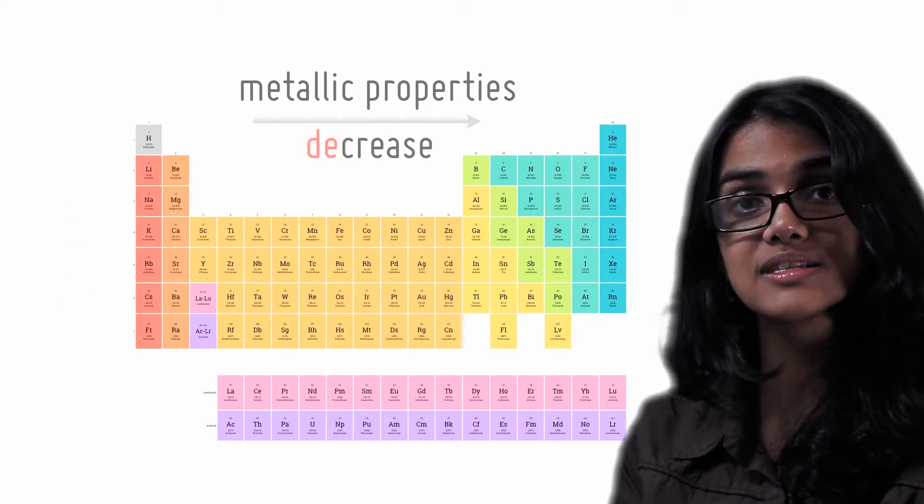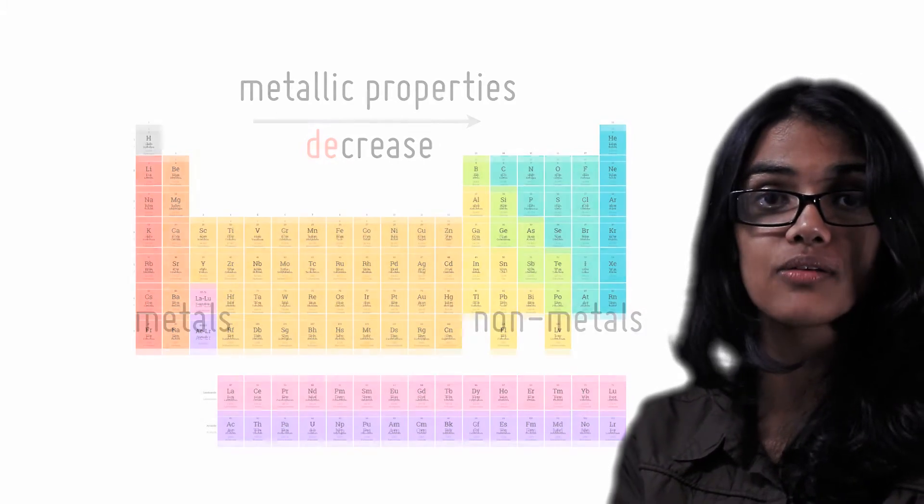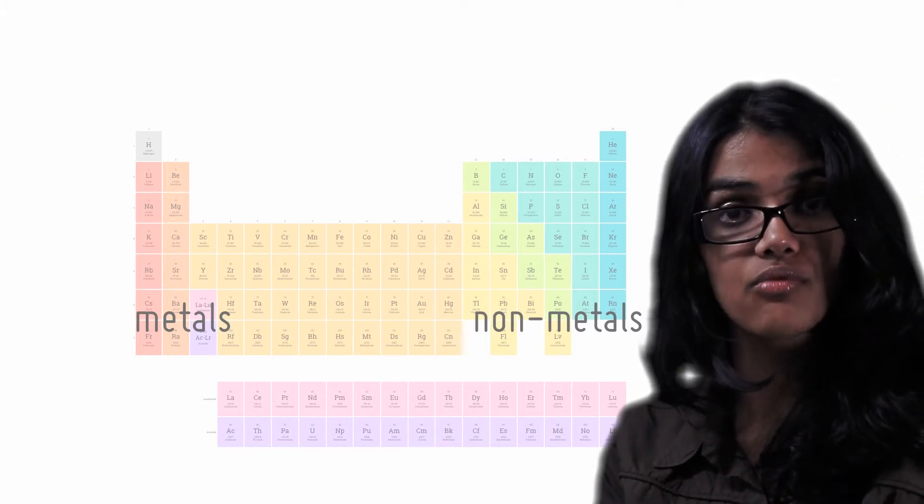Going across a row, metallic property decreases. This is a bit more intuitive because we know that all the metals are on the left side of the periodic table and all the non-metals are on the right.